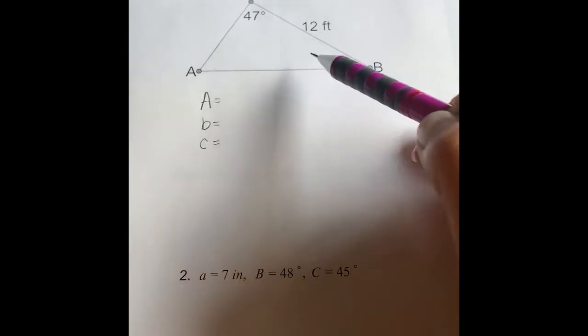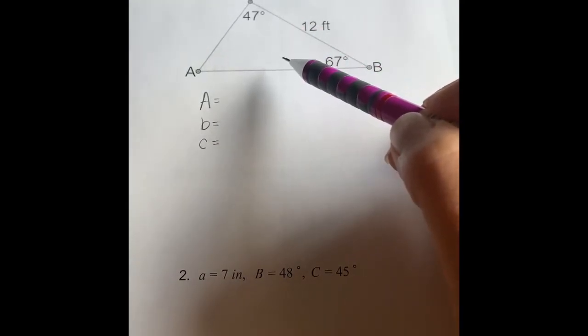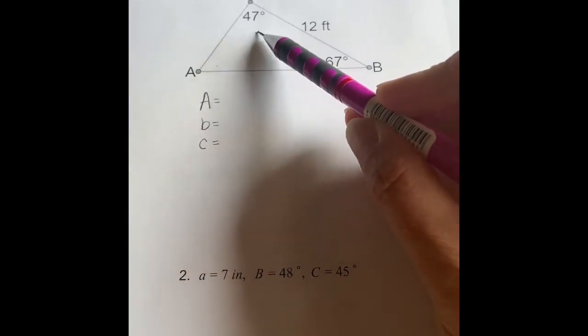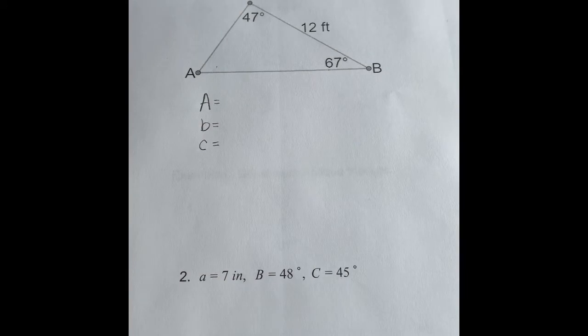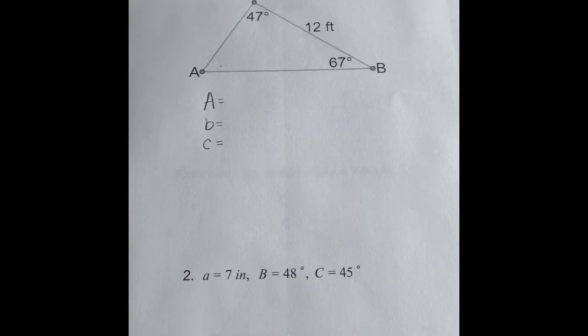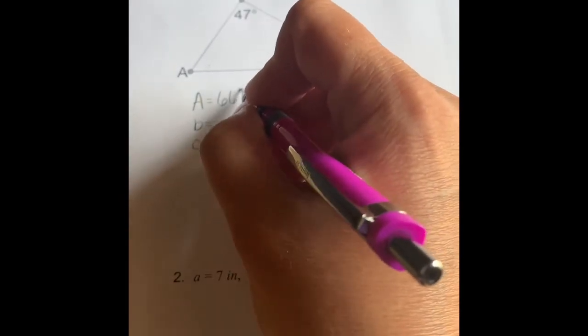Well, even though this is not a right triangle, from geometry you learn that all triangles add up to 180 degrees, regardless of what they look like. So we can quickly find angle A simply by subtracting 47 and 67 from 180. So in your calculator, 180 minus 47 minus 67 is 66. So now we know that angle A is 66 degrees.